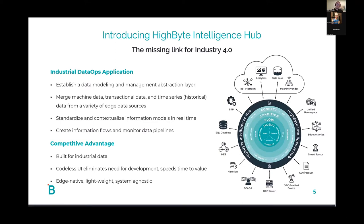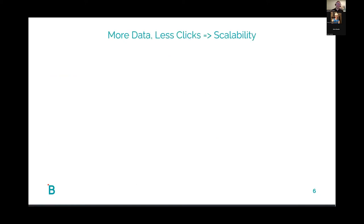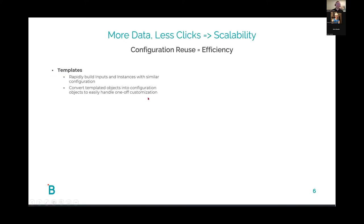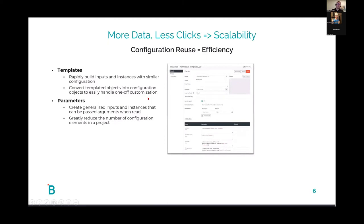In the 2.0 release, we added the ability to have multiple hubs with a single control plane — either within a site or across multiple sites — adding additional scalability as people started deploying the Intelligence Hub across their enterprise.